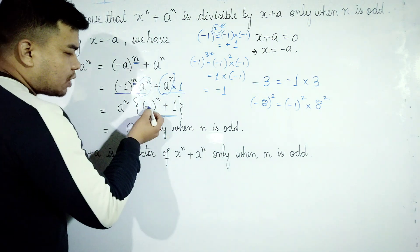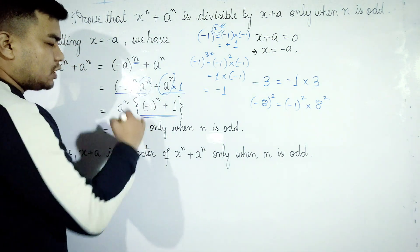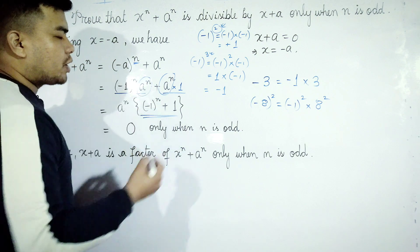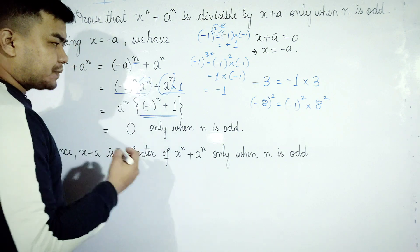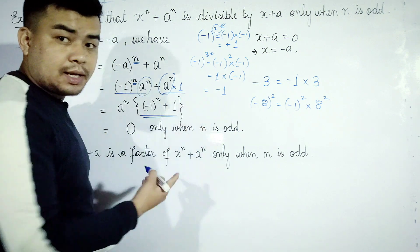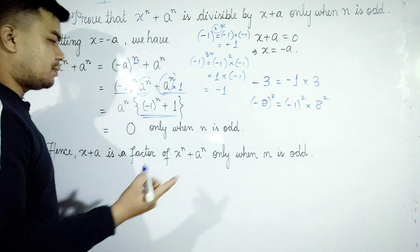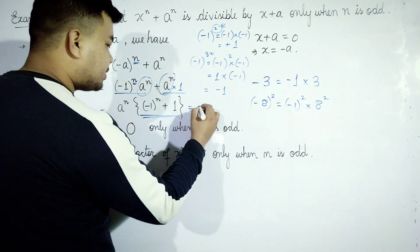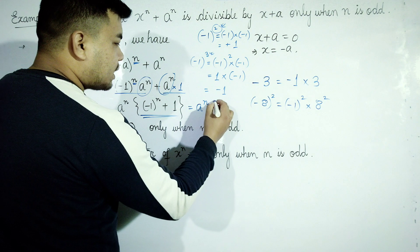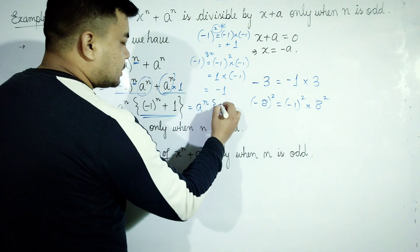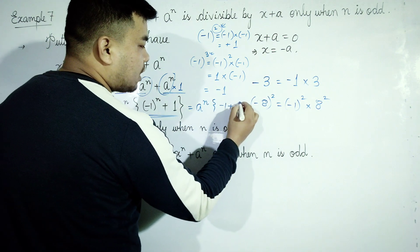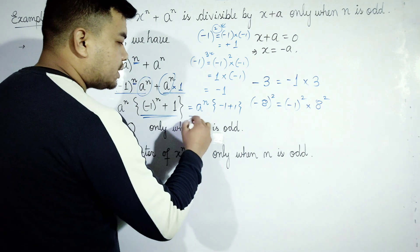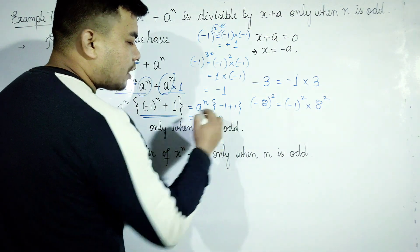When n is odd, minus 1 to the power n equals minus 1. So minus 1 plus 1 equals 0. Therefore the expression equals a to the power n times 0.